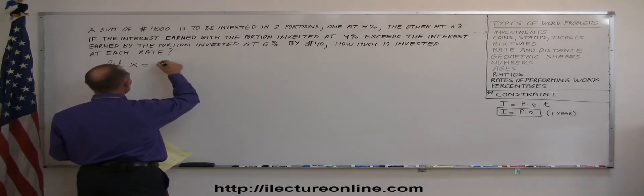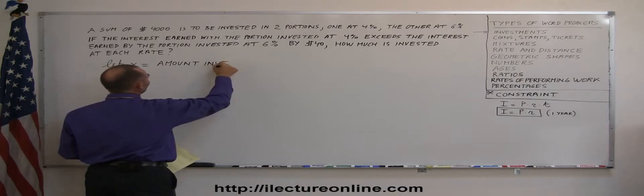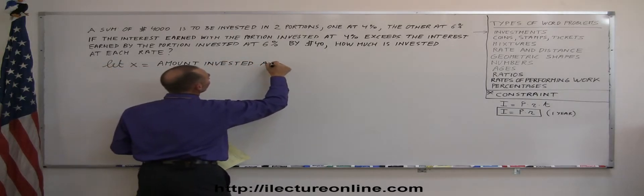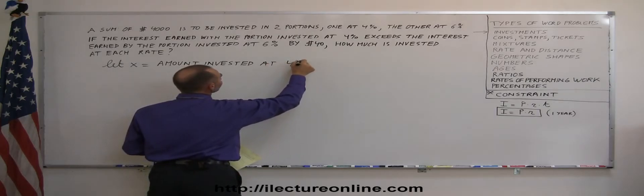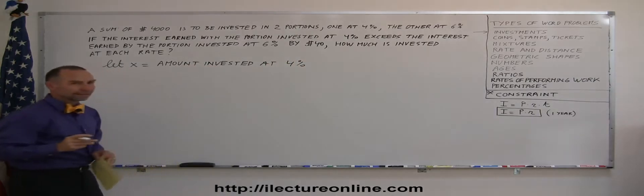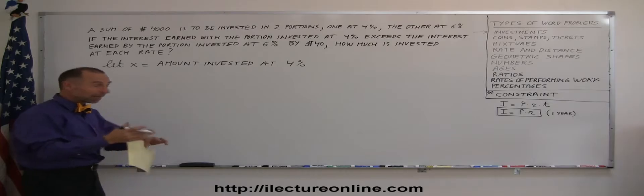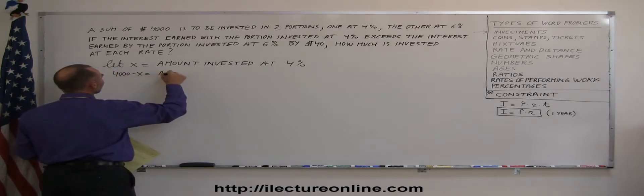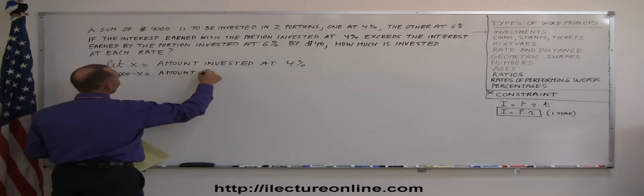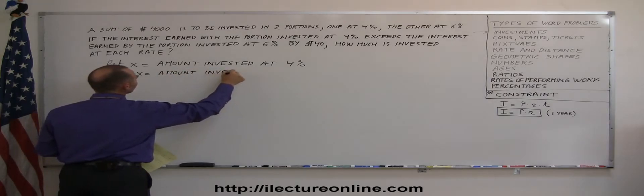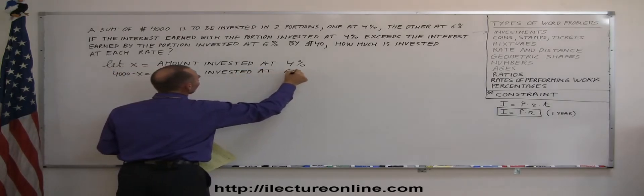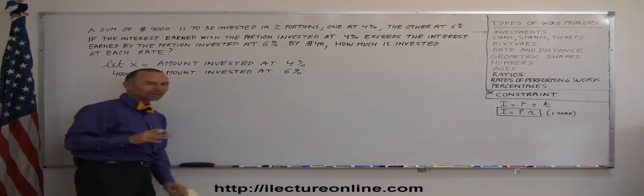Let X equal the amount invested at 4%, and then $4,000 minus X, the remainder, equals the amount invested at 6%. Now, all of a sudden, the problem seems not so bad anymore.